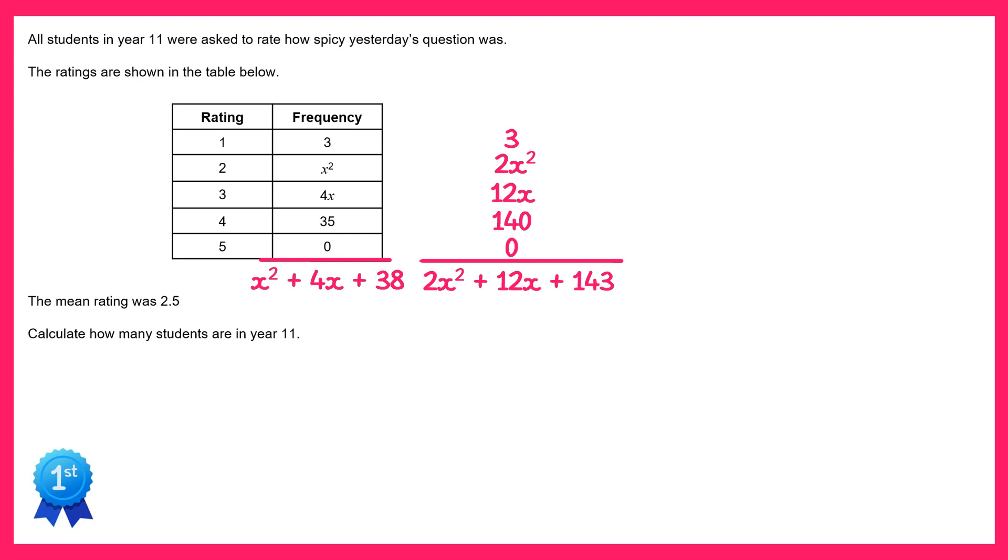Now if we divided the total sum of all ratings by the total number of students we would get the mean rating. So if we do 2x squared plus 12x plus 143 divided by x squared plus 4x plus 38, we should get 2.5.